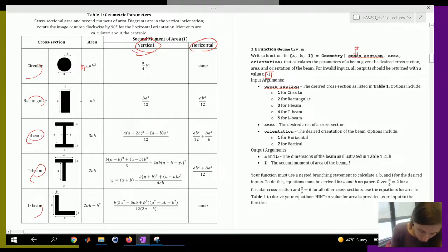Your second one is going to be your area. That's essentially what this is equal to: area equals. So this is also a number. And then your orientation, which is also a number. So your orientation is one or two: one for horizontal, and two for vertical.